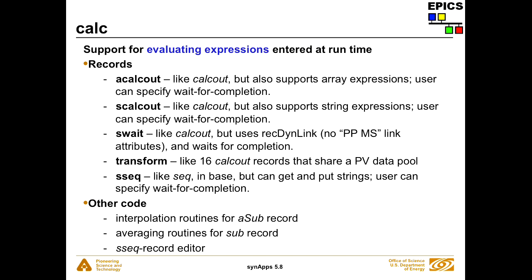Waiting for completion is important: inside an IOC you can just do a PP link and execution will be traced. But if you're writing to a different IOC, execution trace is restricted to a single IOC. So if you want to trace execution across more than one IOC, the record that bridges the gap has to do a put callback itself — and that's what these records do. There are also interpolation routines in the calc module — they do Lagrange interpolation — and a pretty nice averaging routine implemented around the sub record.